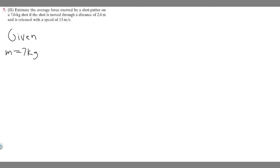We're told that the change or delta x, which is just the change in our x, is going to be 2.8 meters because the shot is moved through a distance of this. So we know delta x is going to be 2.8 meters.